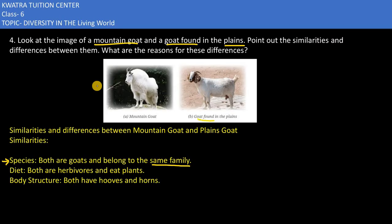The second one is in the plains and the first one is a mountain goat with its mountain adaptation. As for diet, both of them are obviously herbivores and they would be eating plants. For body structure, both have hooves and horns.